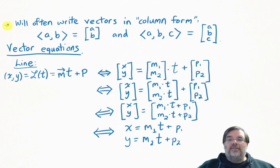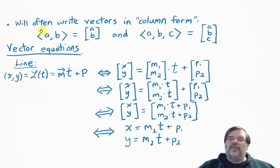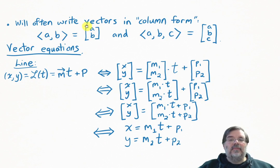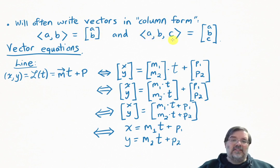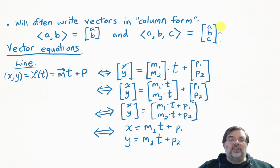Often we'll write vectors in column form. For example, the vector ⟨a, b⟩, which we'd often write with angle brackets, we would write with its entries in a column, using square brackets around it. Or, if we have a three-component vector ⟨a, b, c⟩, we could also write that as a column of numbers a, b, and c, again using square bracket notation. So these are both vectors, just in a different format.